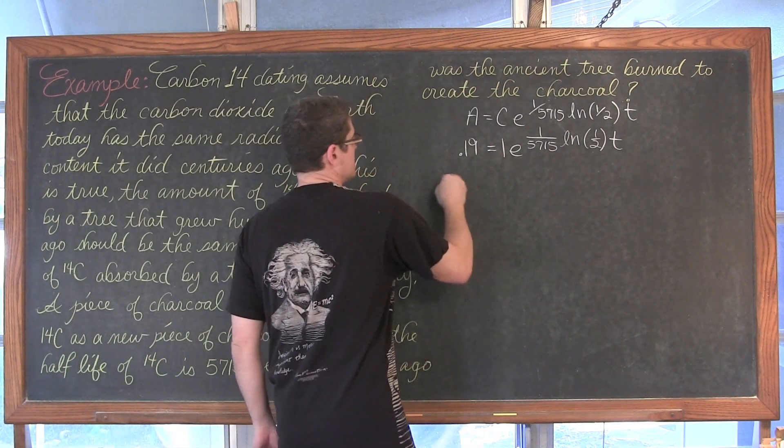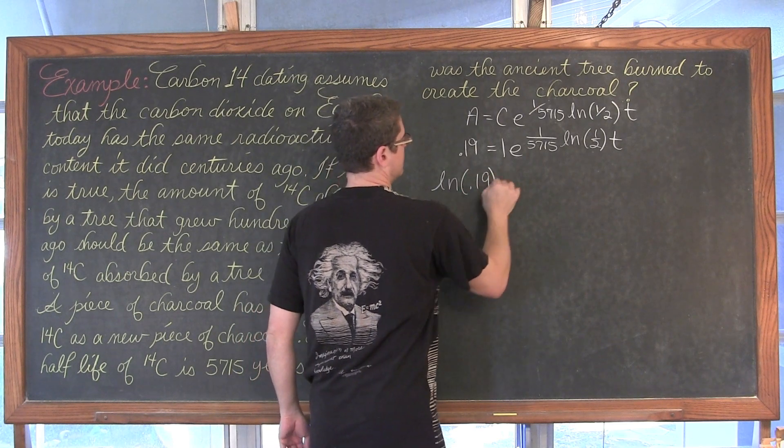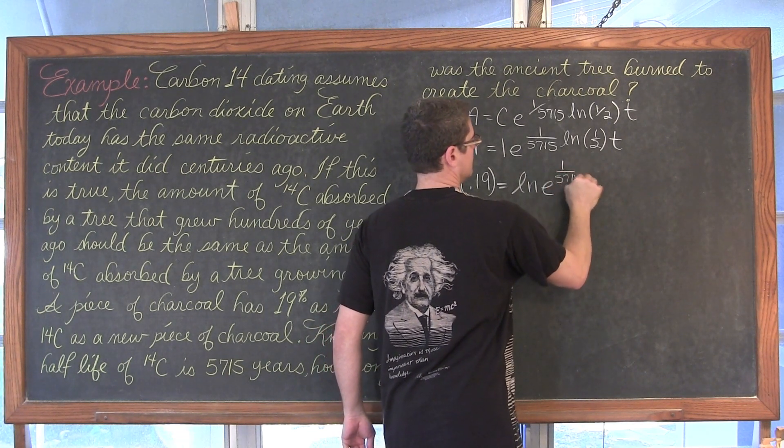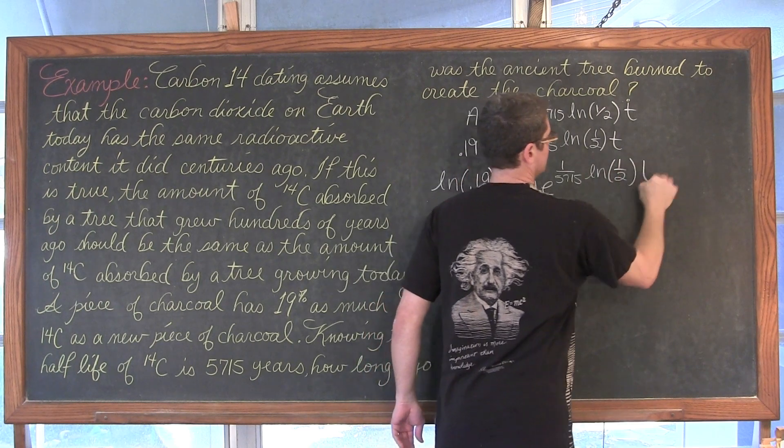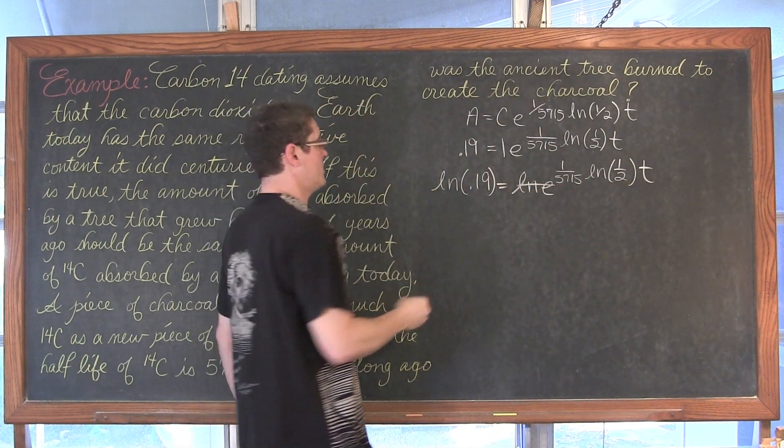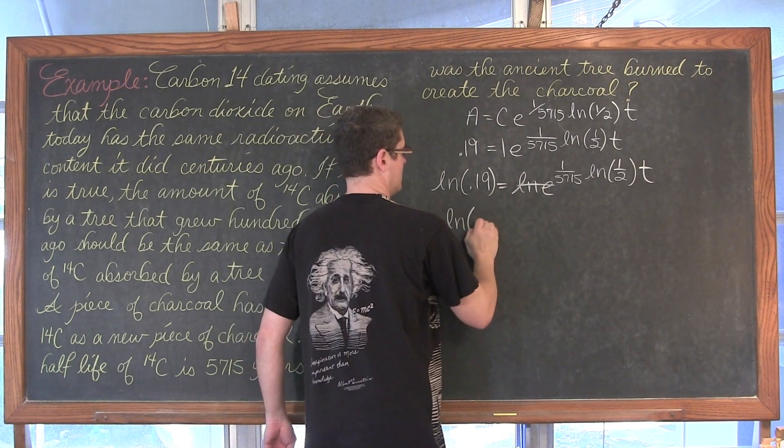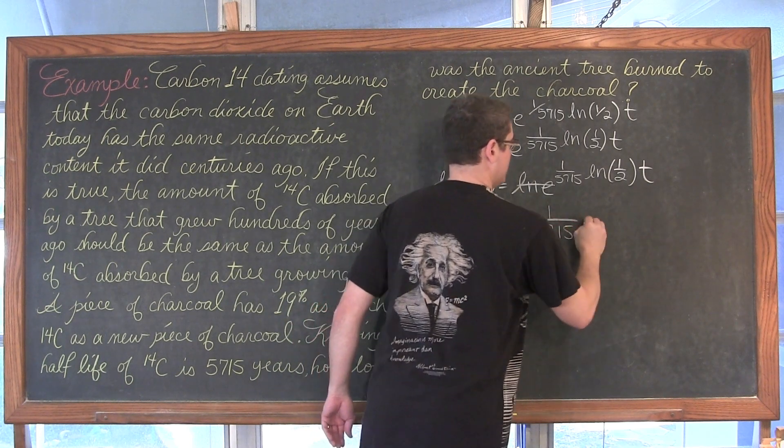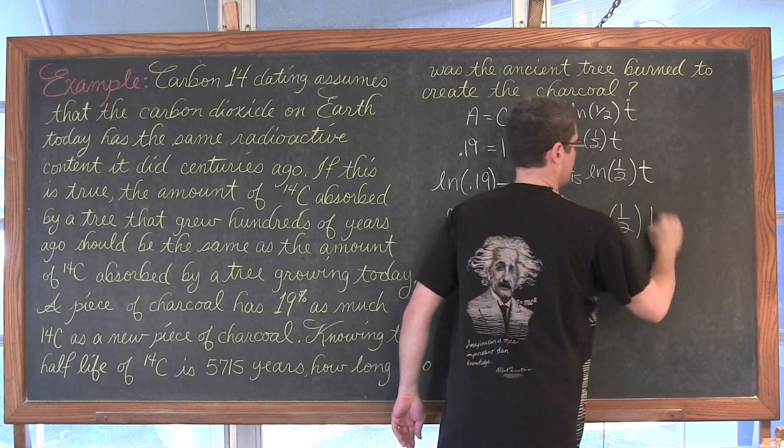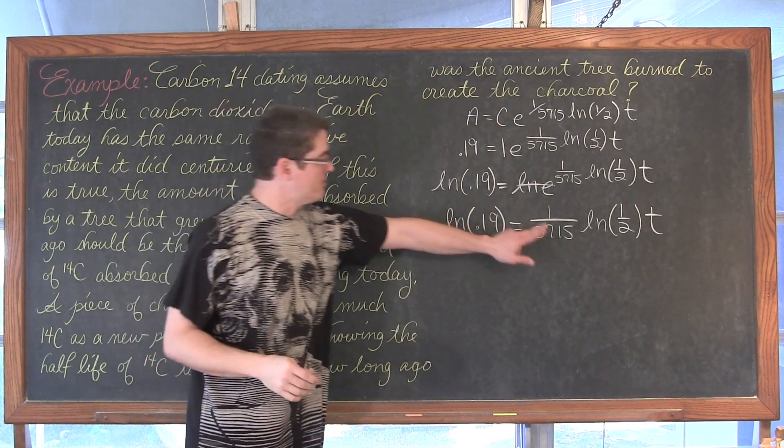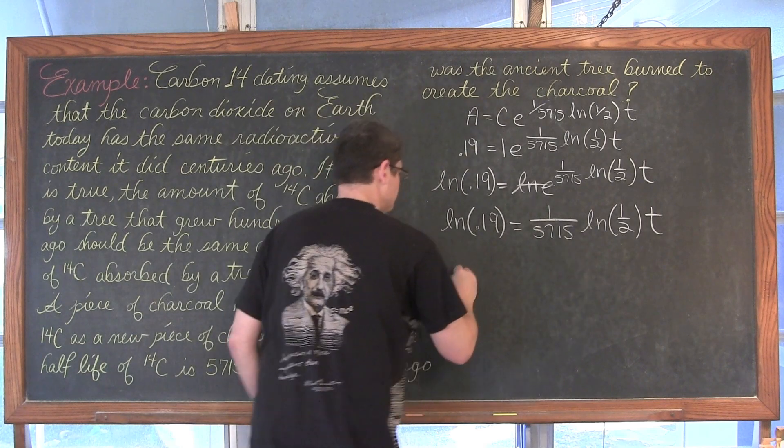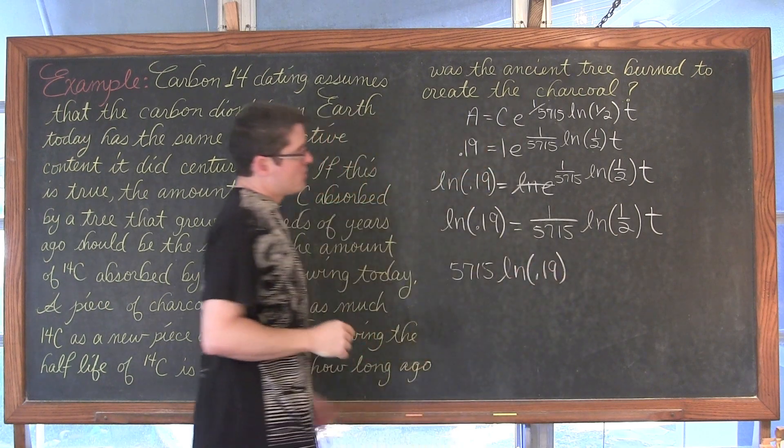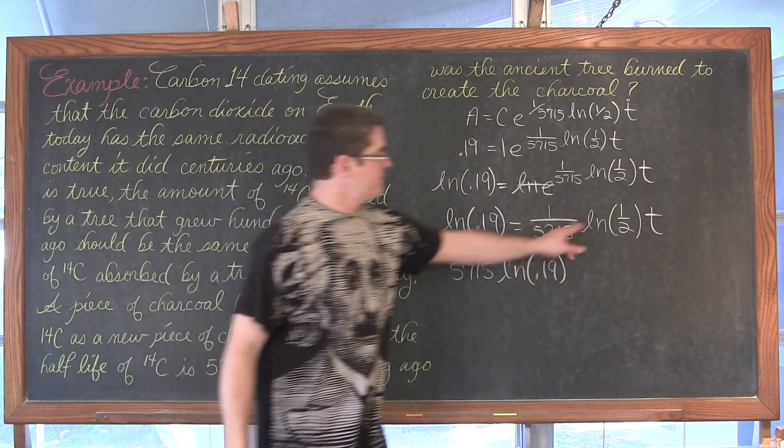That's going to cancel that out. We get the natural log of 0.19 equals 1 over 5715 times natural log of one-half times t. If we're going to solve for t, we're going to multiply both sides by 5715 and divide both sides by the natural log of one-half to undo that multiplication.